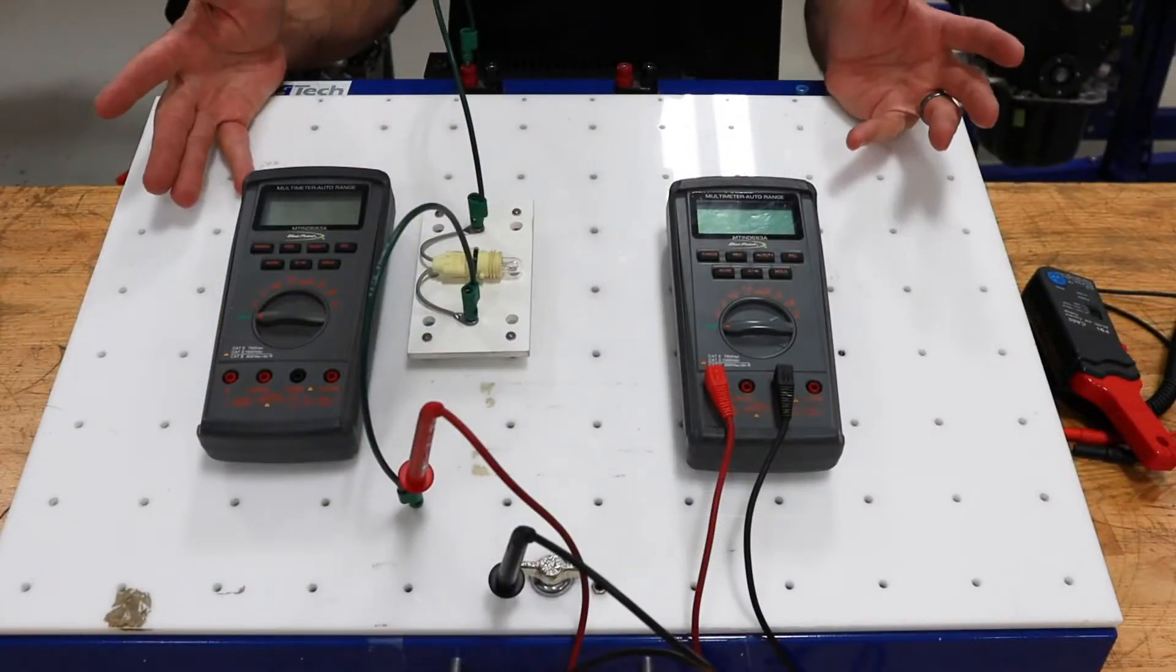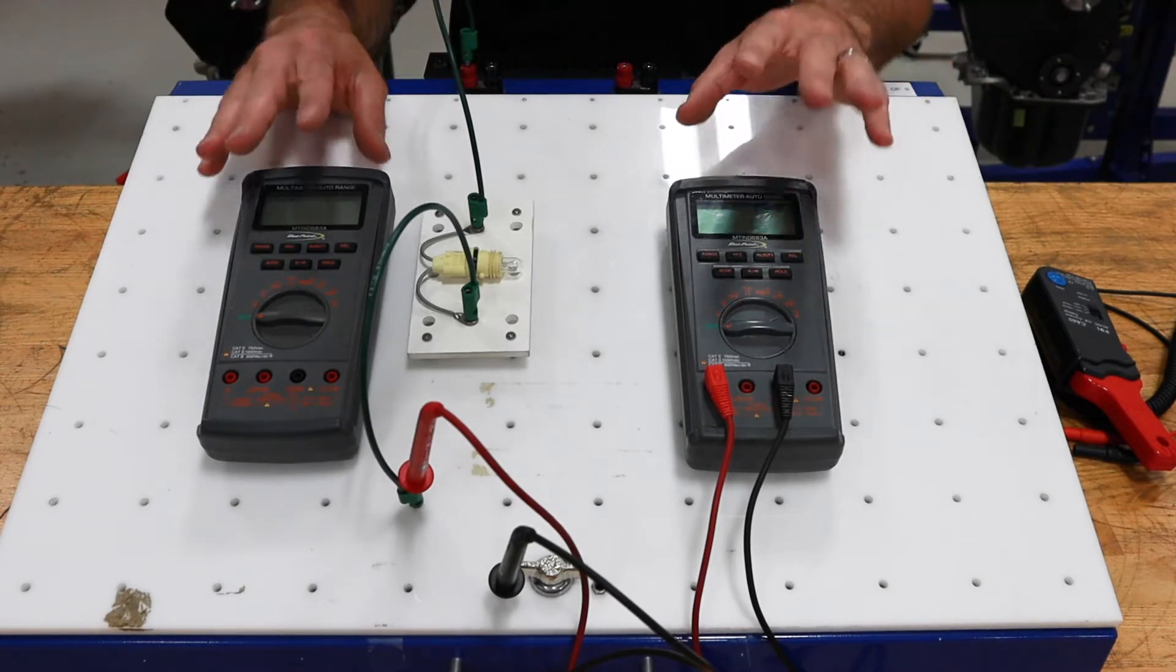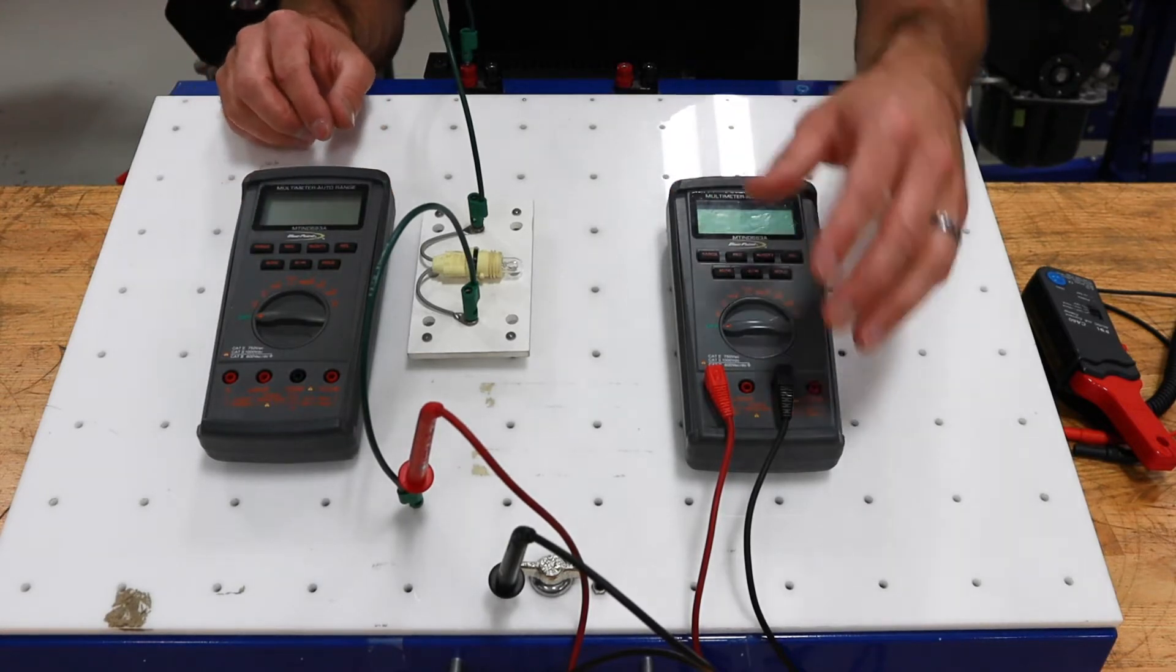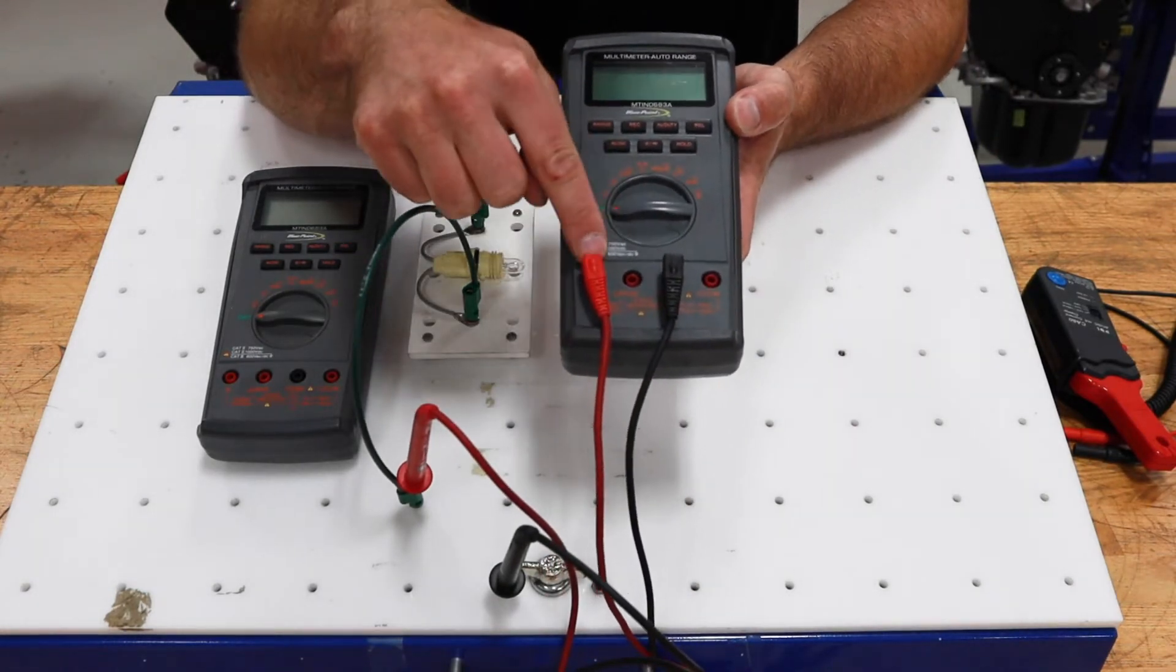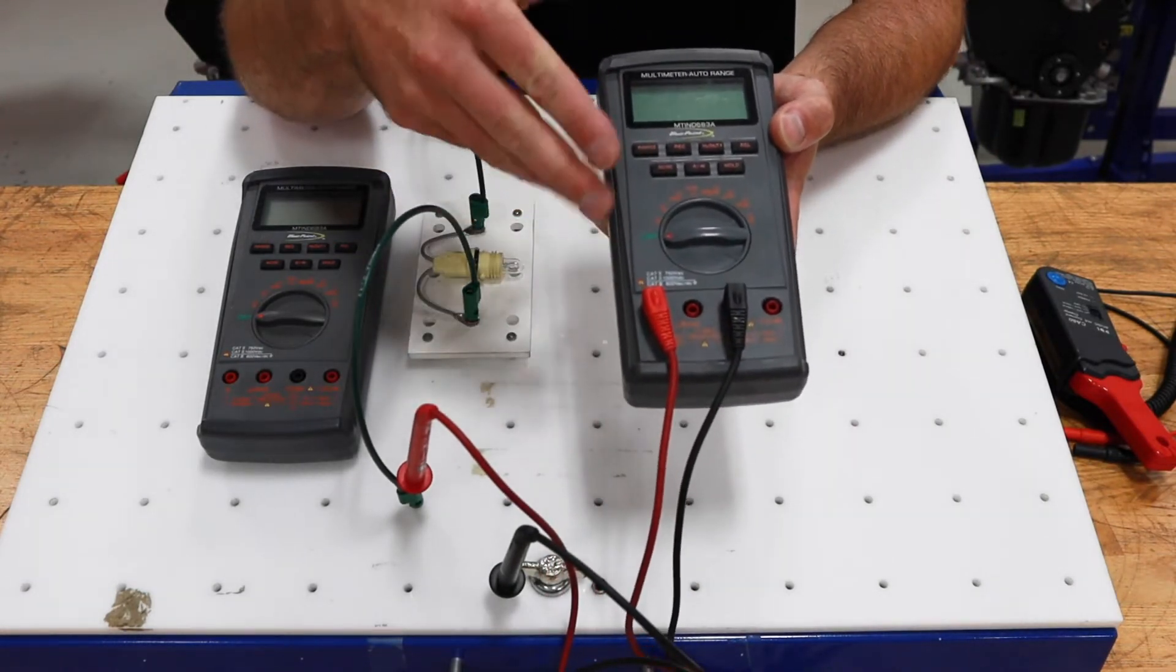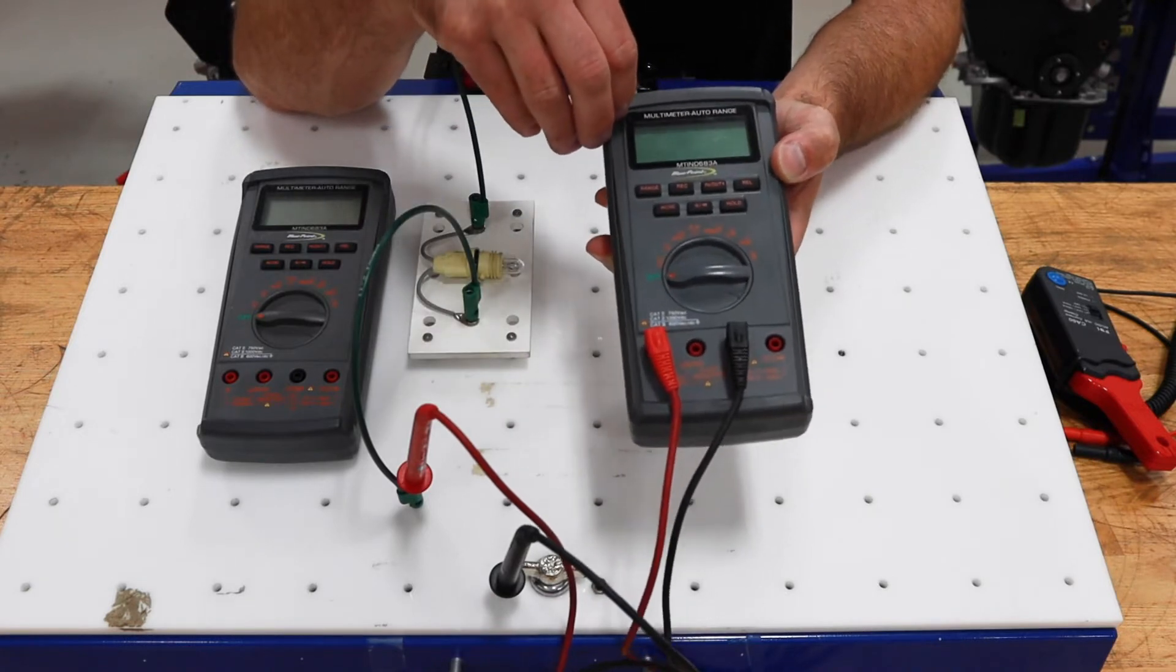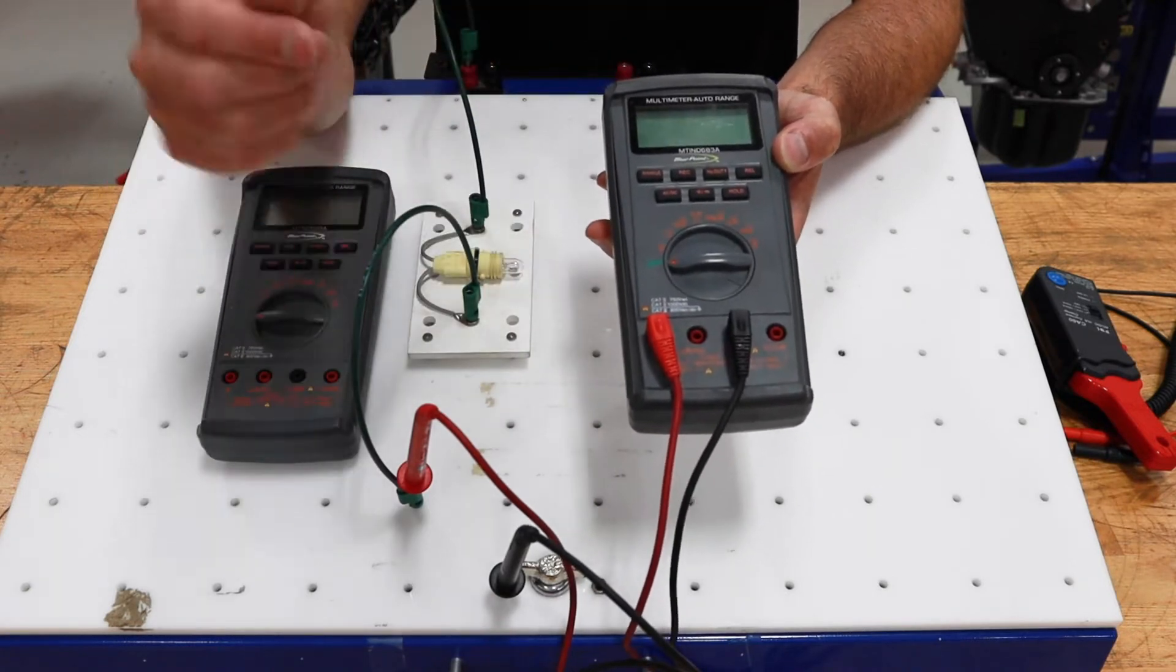There are really two primary ways that I can measure current with a DVOM or multimeter. One of those is to use the built-in current function, and so this one I've got it set up on amps. The way that this works is that it's got to be put in series with whatever the load is that I want to measure.